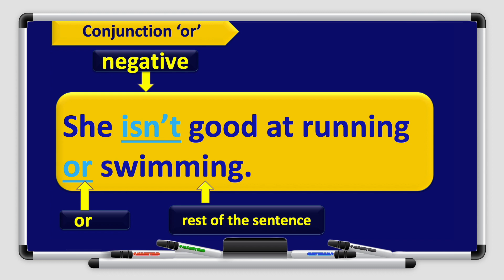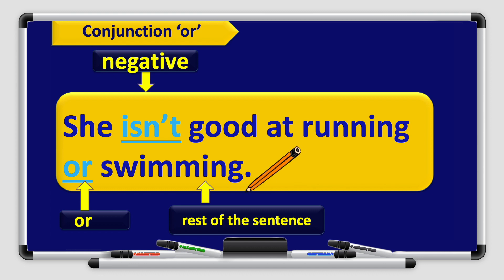This is how we use the conjunction 'or': She isn't good at running or swimming. It means that she's not good at running and she's not good at swimming. I use the verb 'is' plus the negative form 'not' — isn't — and the conjunction 'or', and then the rest of the sentence. So I combine those two sentences together: She isn't good at running or swimming.